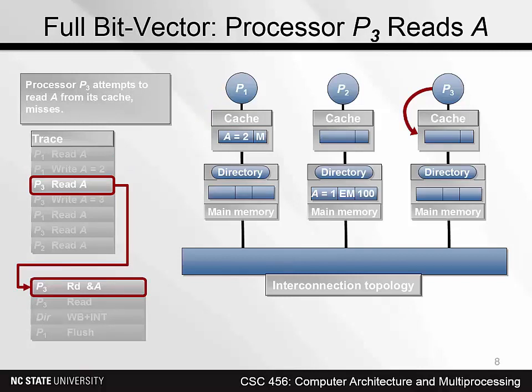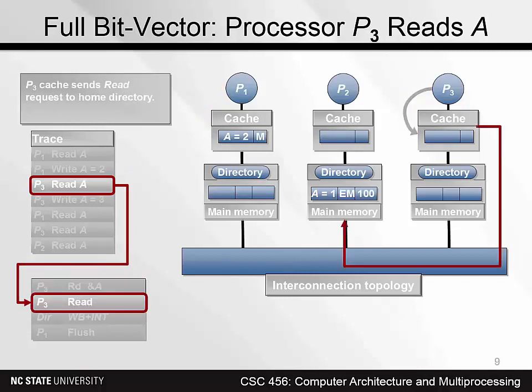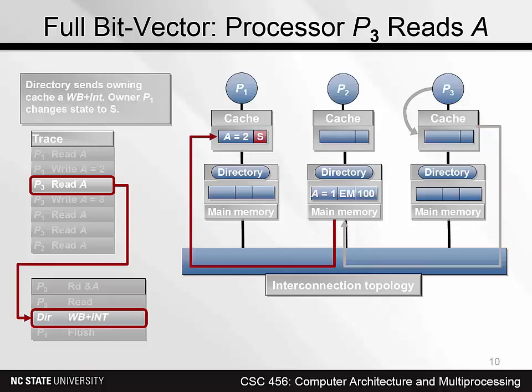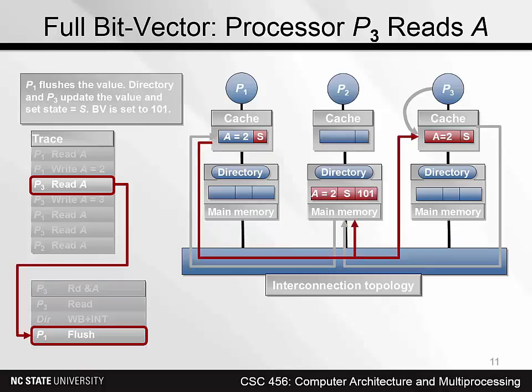Now P3 tries to read A. This causes a miss, so a read transaction is issued. The directory at the home node, node 2, sends the owning cache — that's cache 1 — a write-back plus intervention transaction. This causes the cache to change state to S. P1 flushes the block to cache 3 and to main memory, causing the main memory state to change to S, and the bitvector to change to 101.